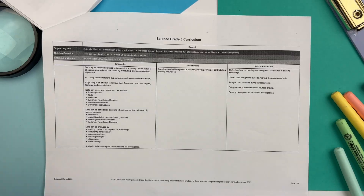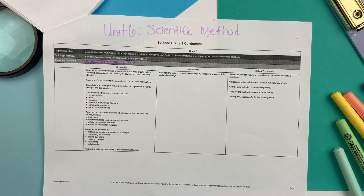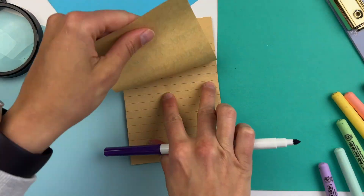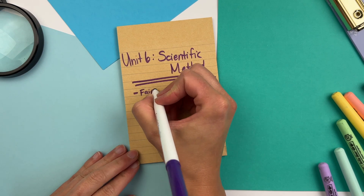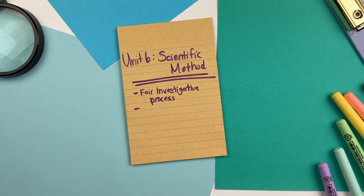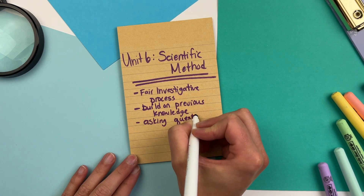The last unit in the new grade three science curriculum is the scientific method. There are six parts where students learn how to become responsible and ethical scientists. The understandings include: what is a fair investigative process, what kinds of investigations or experiments can you do, how investigations build on previous knowledge, how asking questions is part of the process, and what to do with the data and information gathered from experiments. My approach is to embed scientific methods throughout all the other units.